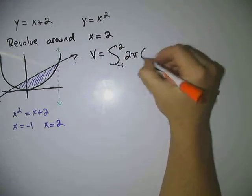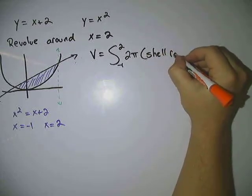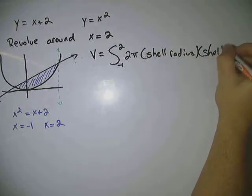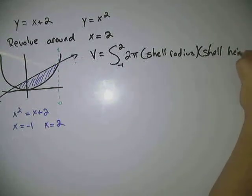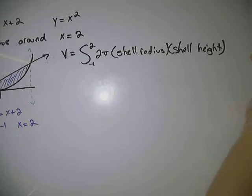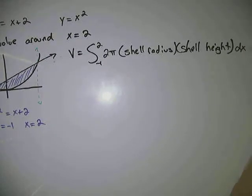Remember the shell method, this is going to be shell radius times shell height, and in our case that's going to be with respect to x.